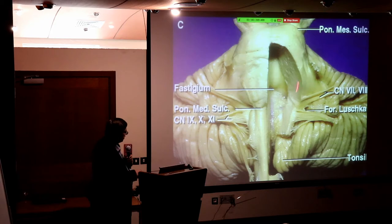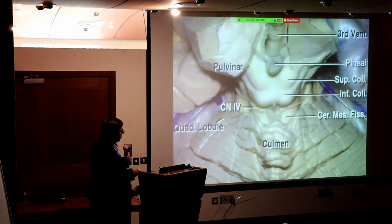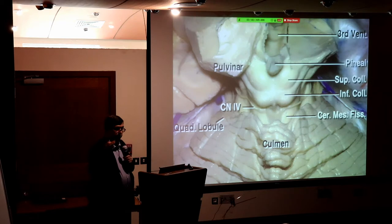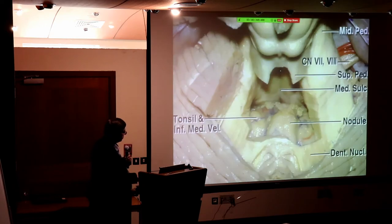Opening the fourth ventricle in a cadaveric specimen, you'll see the choroid plexus. Looking from behind, this is the pineal body, this is the midbrain, and the posterior midbrain surface is the tectal plate, composed of the superior colliculus and inferior colliculus — each with its own function. Then we have the pons and the cerebral hemispheres. Digging here brings you to the fourth ventricle.